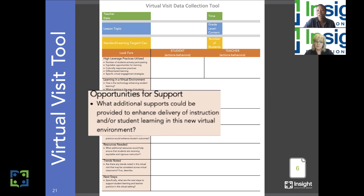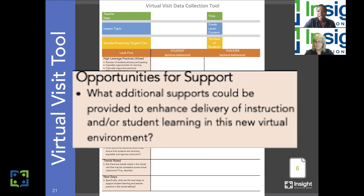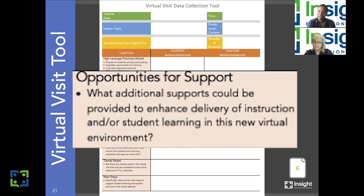The next thing to look for is what opportunities for support exist. As you consider the strategies and elements in the virtual environment, make note of what additional supports could be provided to enhance the delivery of instruction, and what could make the teacher stronger to take a good lesson to a great lesson. That could look like, in a session where half the students are not actively responding, providing the teacher with additional training on how to get kids engaged during a virtual lesson. It could also mean providing multiple instructional level texts so students of all reading and ability levels can access the material.